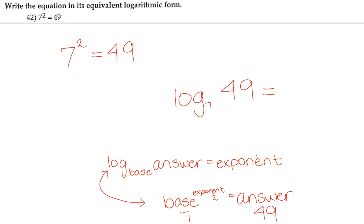equals exponent. And our exponent, we said, is already 2. So 7² = 49 in its equivalent logarithmic form is log base 7 of 49 equals 2.